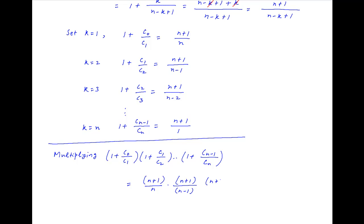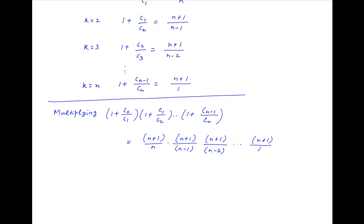So the product becomes n plus 1 upon n times n plus 1 upon n minus 1 times n plus 1 upon n minus 2 and so on times n plus 1 upon 1. The numerator is equal to n plus 1 raised to the power n, and the denominator is equal to n factorial. And this is the required result.